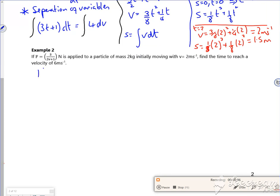So F equals MA, but A is now dv dt, so I've got F as a function of V, so 2 over 2v plus 1 is equal to a mass of 2 times by dv by dt.